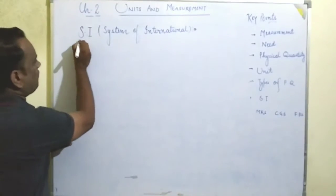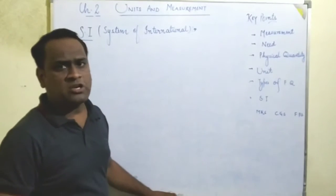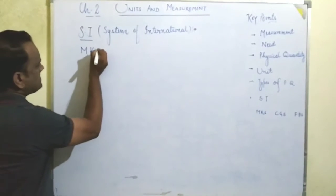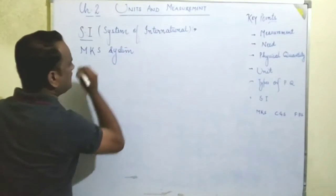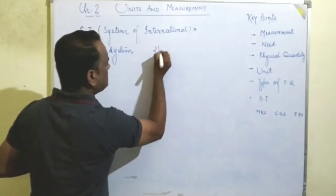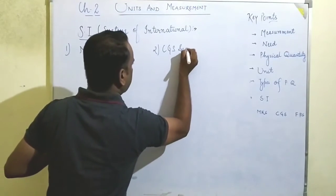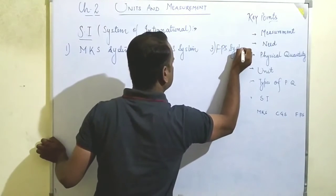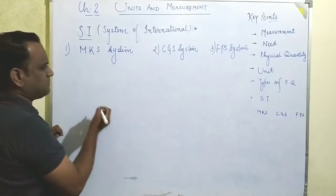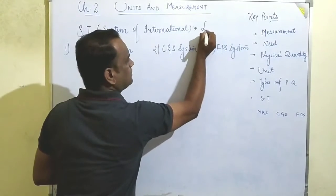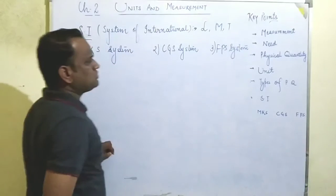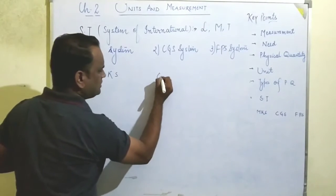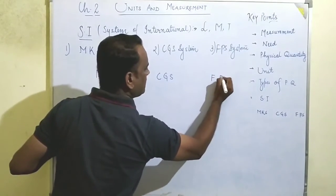So the System of International sets the standard for the measurement of quantities. It is subcategorized into three parts: the first one is the MKS system, the second one is the CGS system, and the third one is the FPS system.